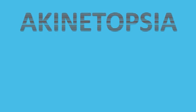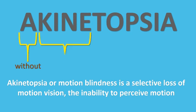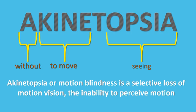Have you heard about a visual disorder called akinetopsia? Akinetopsia is a selective loss of motion vision — the inability to perceive motion. The word akinetopsia itself is pretty self-explanatory. It is a Greek word: 'a' standing for without, 'kinet' for move, 'opsia' for seeing — so 'without move seeing.' Therefore, akinetopsia is often called motion blindness.